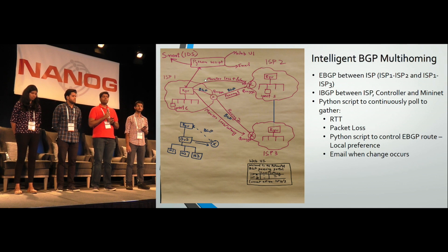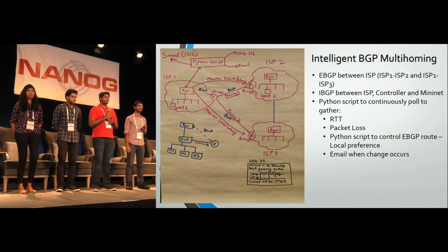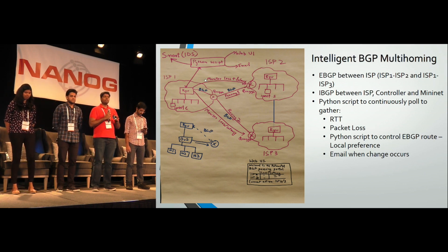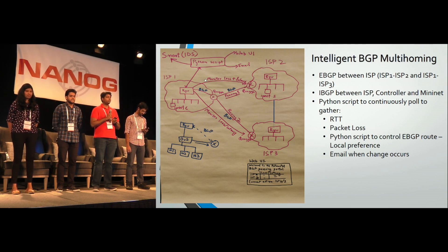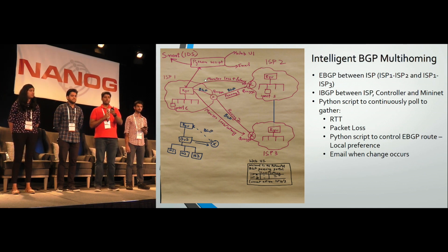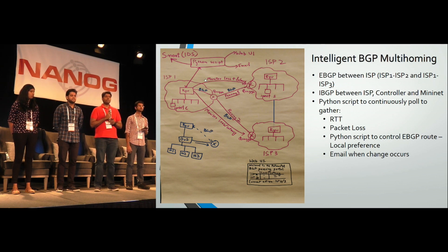We used Quagga because it's easy to configure and easy to automate. In a single ISP, the model used was a Ryu controller with a Mininet topology. Instead of using a live topology, we used Mininet to simulate it with open virtual switches and hosts. The Ryu is connected to the Quagga routers, and those Quagga routers connect to the Quagga routers in the next ISP. We ran iBGP within the Quagga and the controller, and eBGP between the Quaggas of different ISPs.